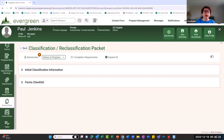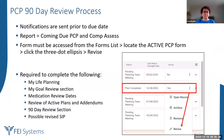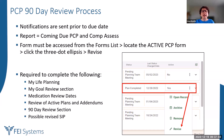All forms follow the same rhythm: start the form, fill it out, check completion requirements, update the status to move to the next workflow stage, and a notification goes to the recipient. When they act on it, you get a notification back. Switching gears: the 90-day review and annual PCP have some nuances from the initial PCP. Evergreen tracks the 90-day schedule for you and sends notifications — you also have a 'Coming Due PCP and Comp Assessment' report available.